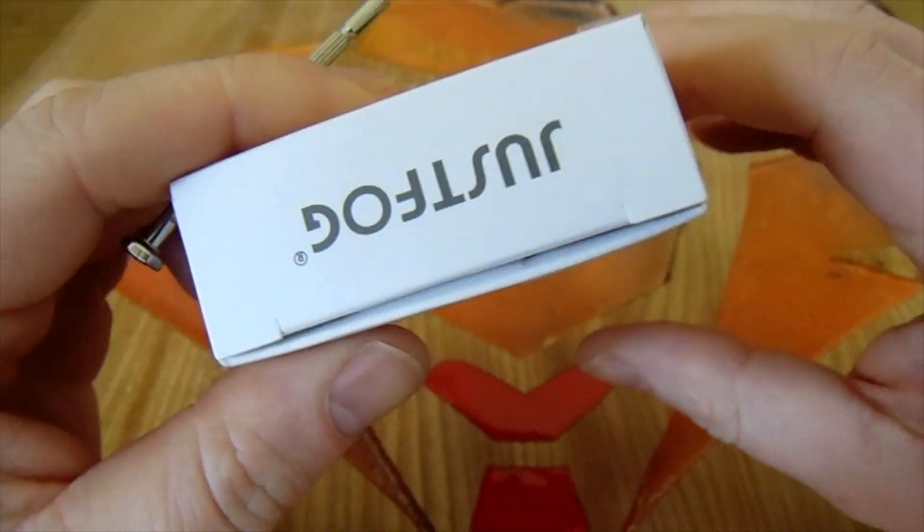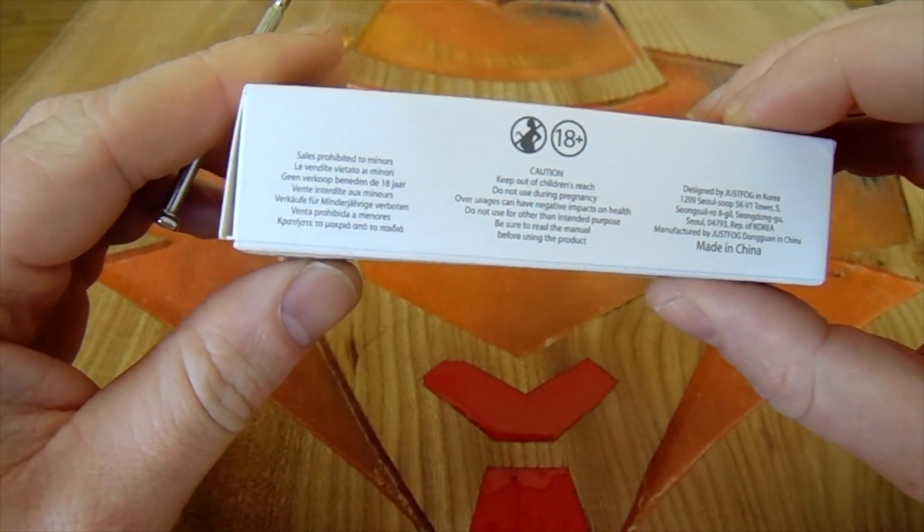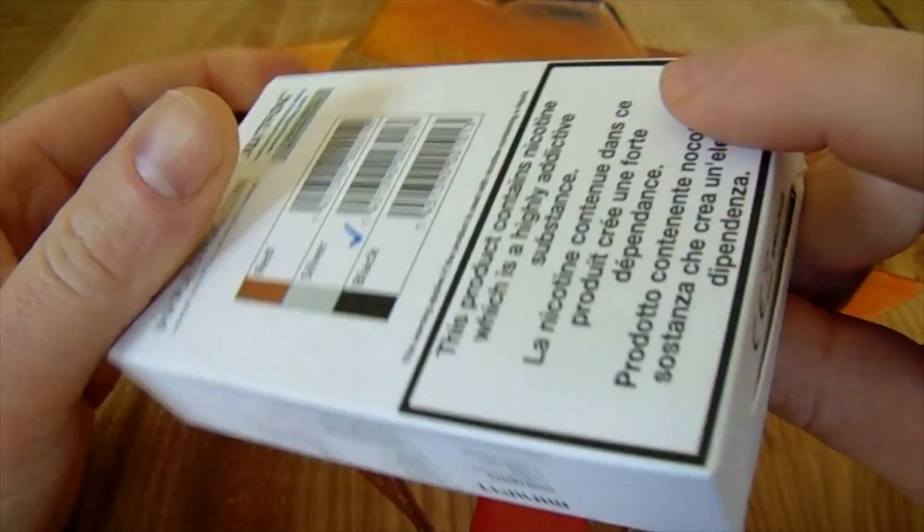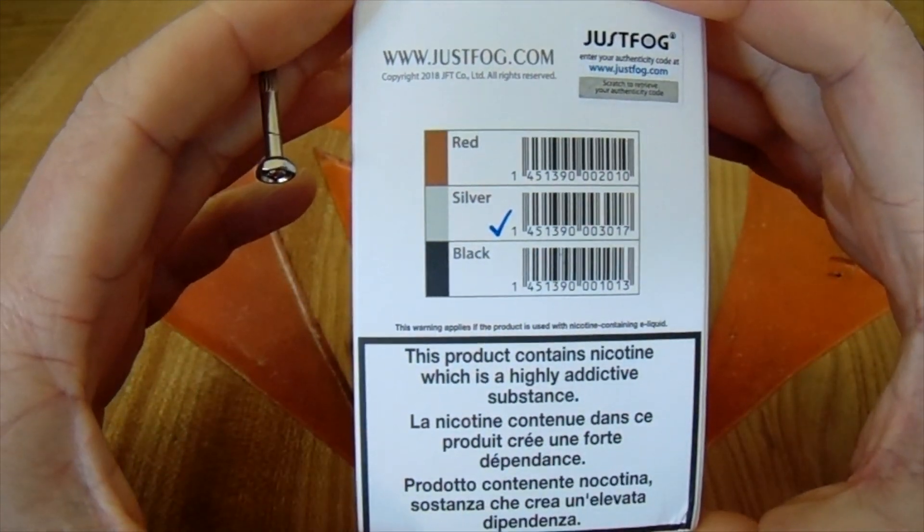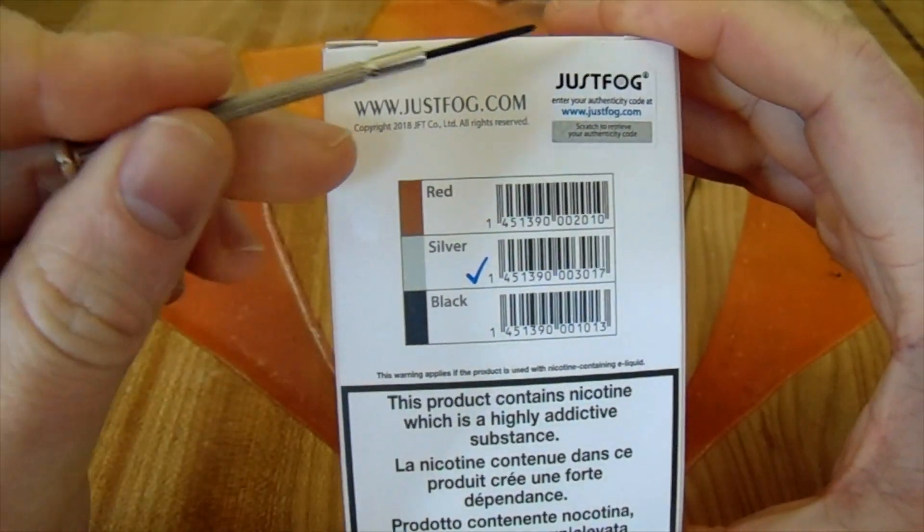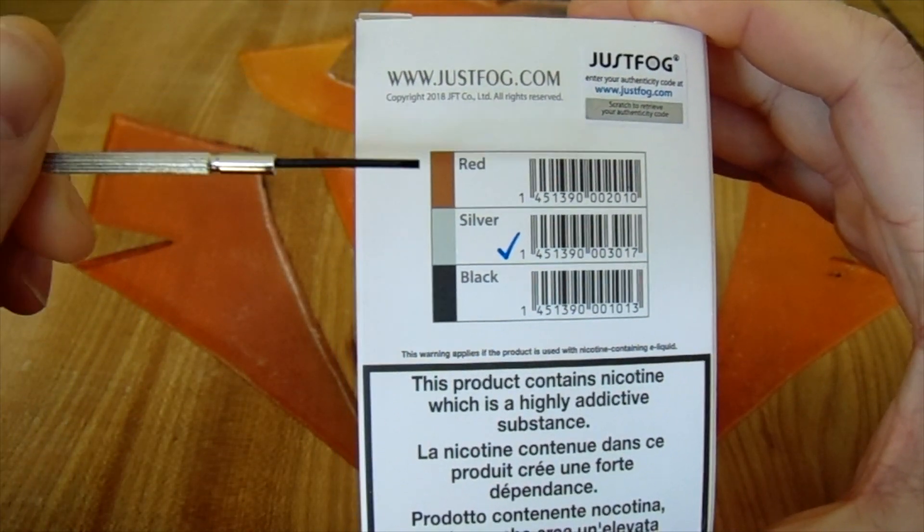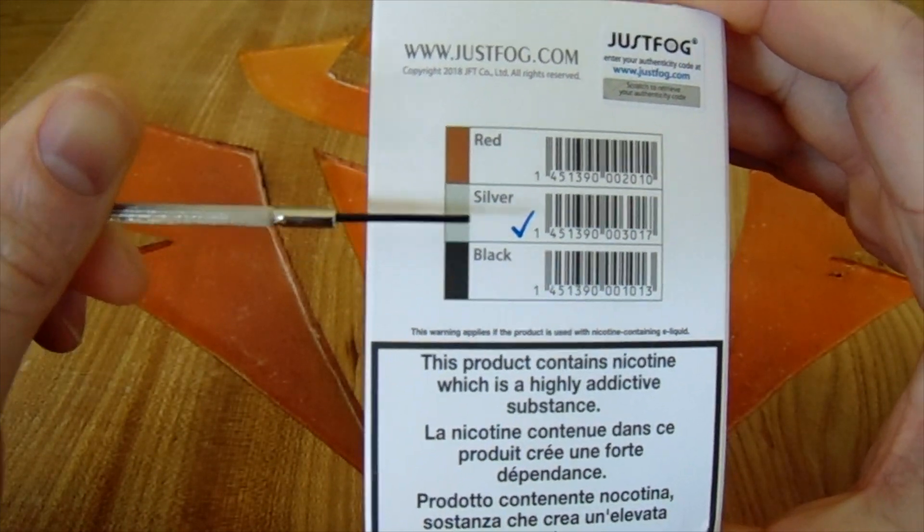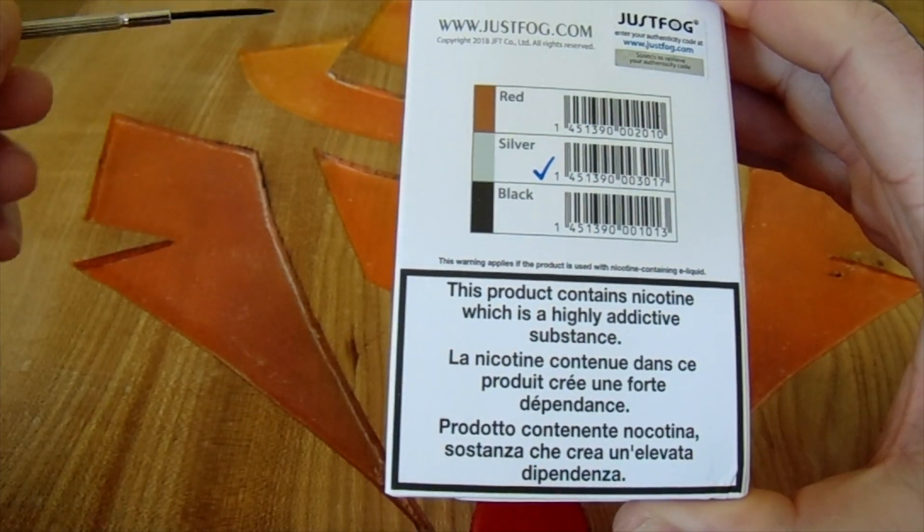On the top you've just got the JustFog logo. On the side you've got some cautions, on the bottom your usual information, and on the back you've got your scratch and sniff at the top with their website. What colors it comes in: red, silver, and black. This one is the silver one.